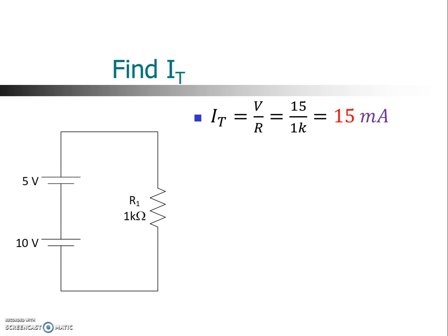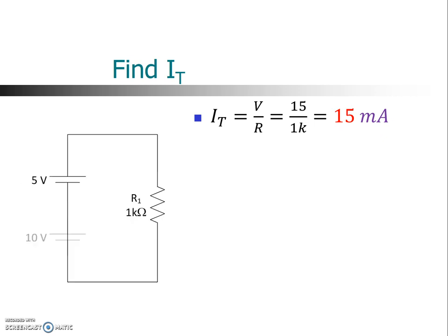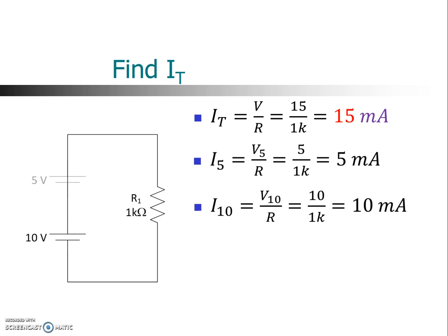But let's consider what happens if we try to figure out what the current is doing from each source independently. So let's pretend we have just the 5-volt source in the circuit. With just the 5-volt source, we have a supply voltage of 5 volts, still have a 1K resistor. So Ohm's law will tell us we have 5 milliamps. And we could do the same thing with the 10-volt source. We apply 10 volts as a supply, 1K as a resistor, and we will get a current of 10 milliamps.